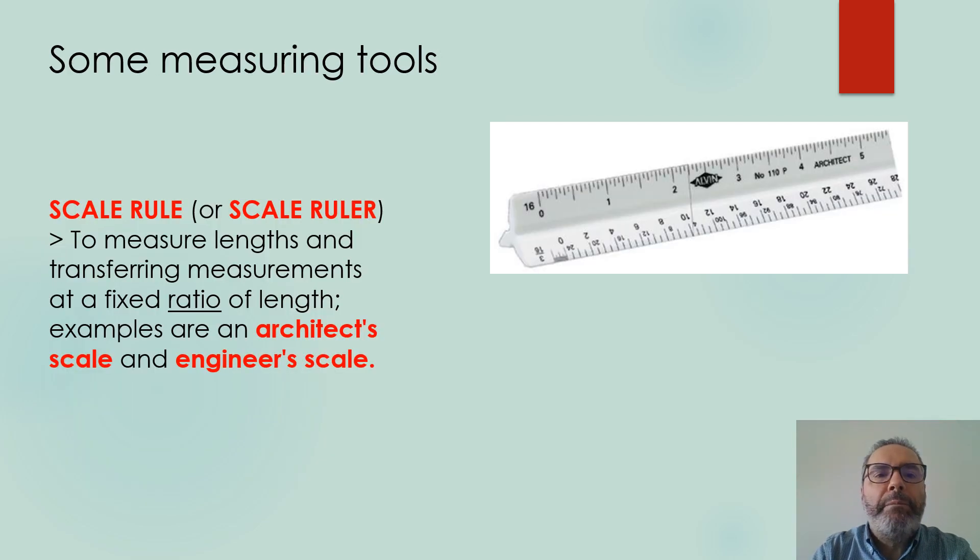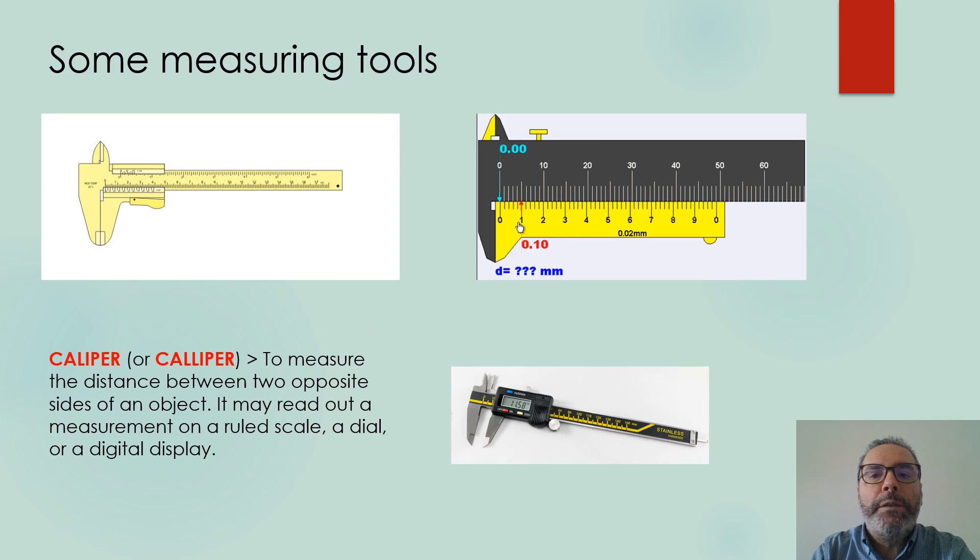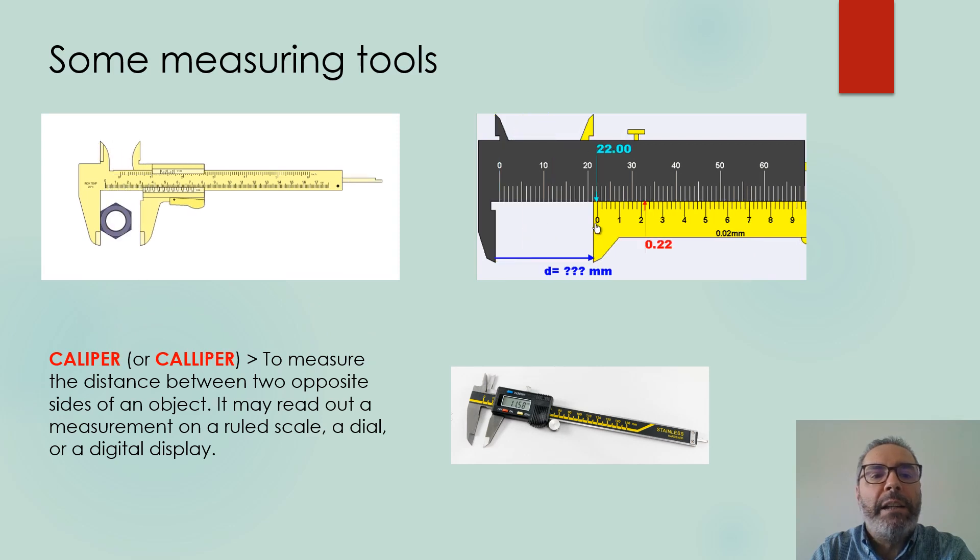Now we will see some measuring tools. There are many, but the most normal ones are the scale rule, scale ruler, a device to measure lengths and transferring measurement at a fixed rate ratio of length. Two examples are the architect's scale or the engineer scale.